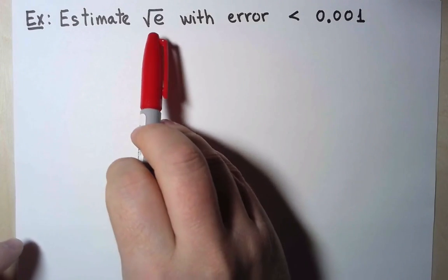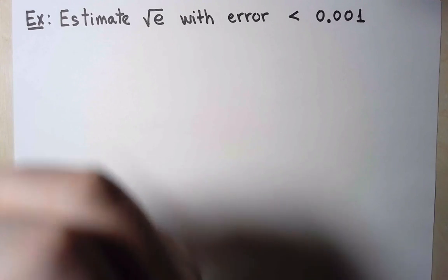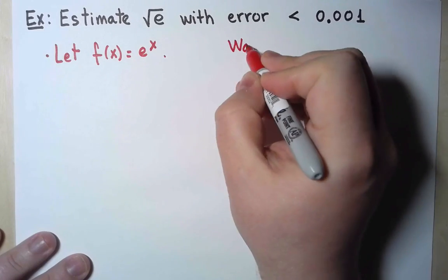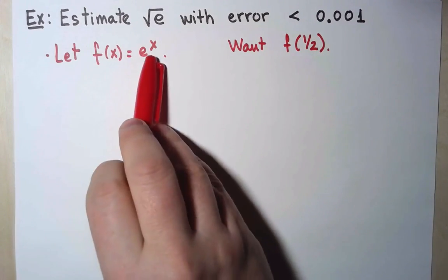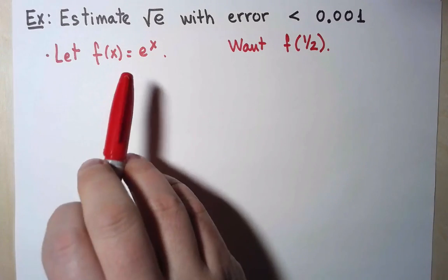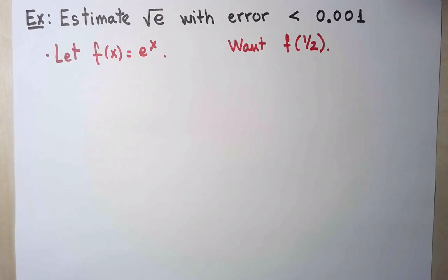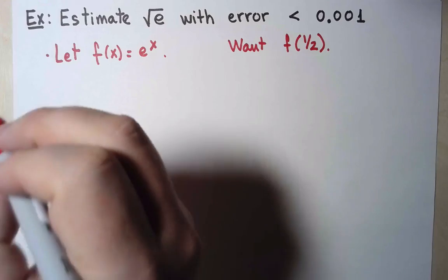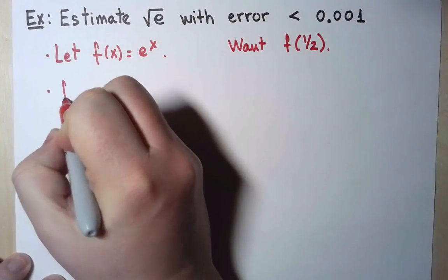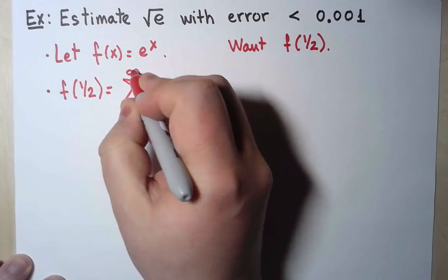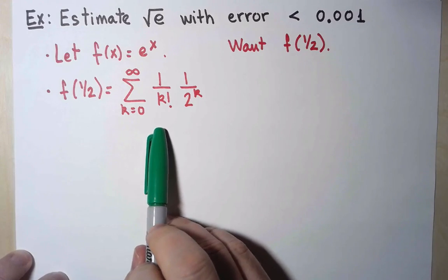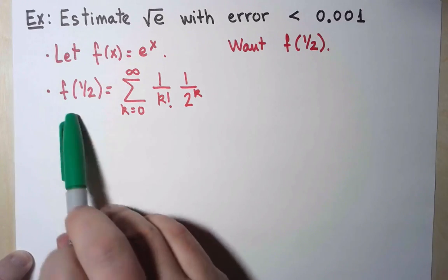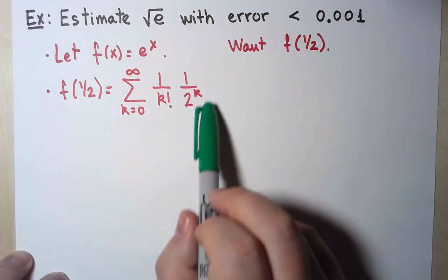I can interpret root e as e to the 1/2. So I want to compute the value of this function when x equals 1/2. And we know the exponential is an analytic function, so it's equal to its Maclaurin series. What I wrote here is simply the Maclaurin series expansion of the exponential, evaluating when x equals 1/2.